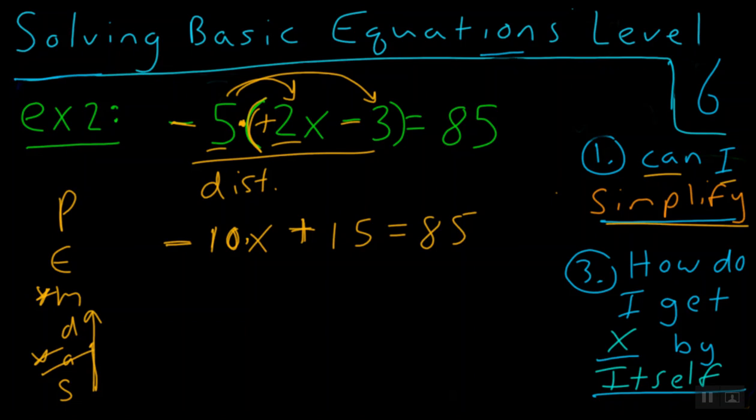Well, what's the opposite of plus 15? That's minus 15. What I do to the left, I have to do to the right. And of course, we just created a zero pair. Now from here, we have negative 10x is equal to 85 minus 15, which is 70.